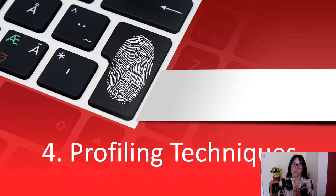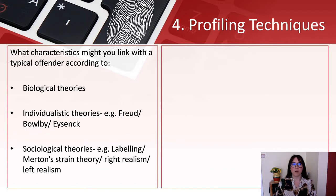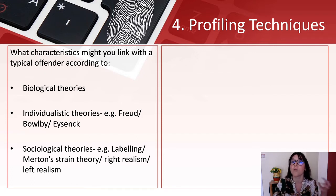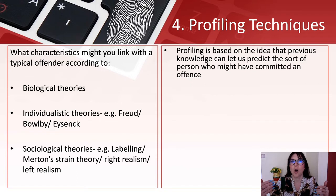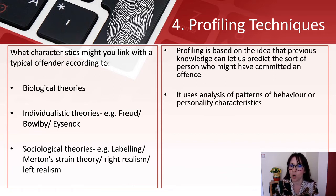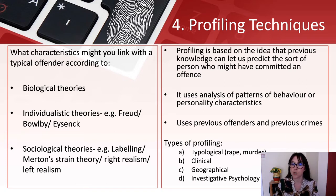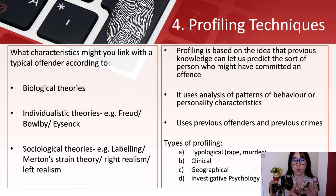Profiling techniques. Profiling is split into four different sections and is a huge area. It looks at what characteristics you might link with a typical offender according to biological and sociological factors — bringing back a bit of unit 2, since a lot of second-year work is synoptic. Profiling is based on the idea that previous knowledge can let us predict the sort of person who might have committed an offence, working out who the criminal is using analysis of patterns of behaviour or personality characteristics, as well as previous offenders and crimes.